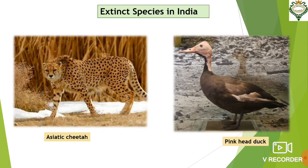Let us look at some extinct species in India. This category includes animals or birds which are not found after searches of known or likely areas where they may occur. That means they were found in some particular places, but at present, even after searching hard, they are not found. These species include the Asiatic cheetah and the pink head duck. The picture you are seeing is a model — it is not the real picture of the bird. So that was in brief about the wildlife of India. There are many more wildlife animals and birds found in India, and you can always look into internet resources to find those.